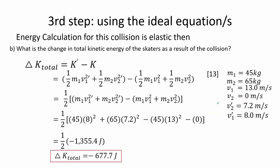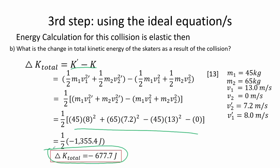For letter B, we find the total change in kinetic energy of the skaters as a result of the collision. Taking the difference of kinetic energy after minus kinetic energy before, the change in total kinetic energy equals negative 678 joules.